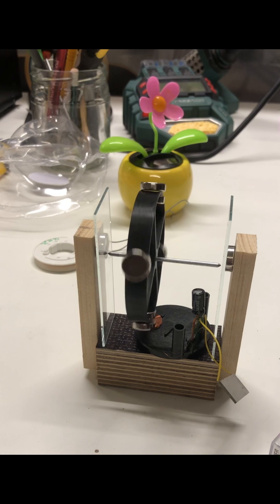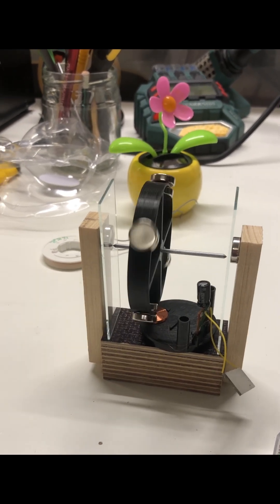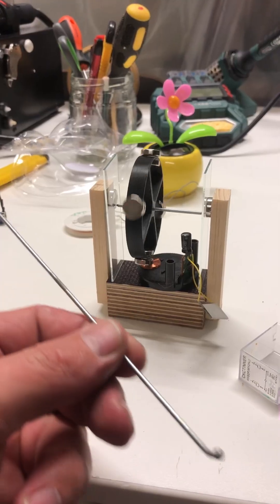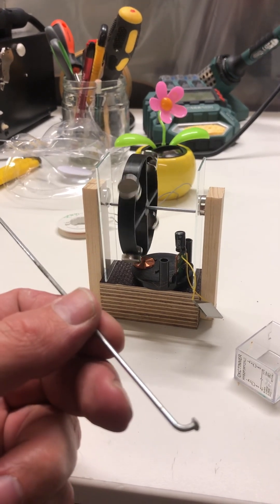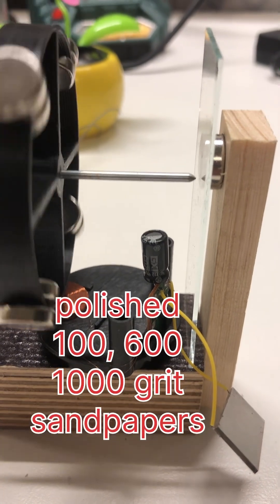It works on room light, levitated at one side, this is bicycle spike, end was ground and then polished.